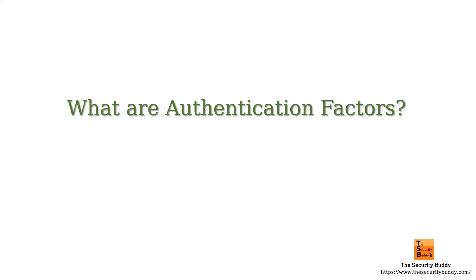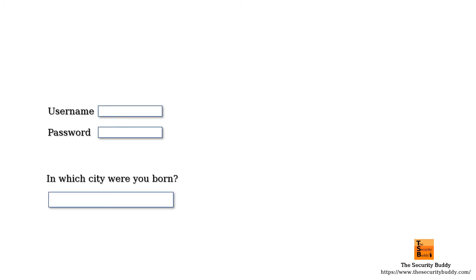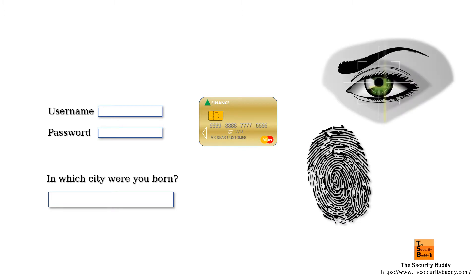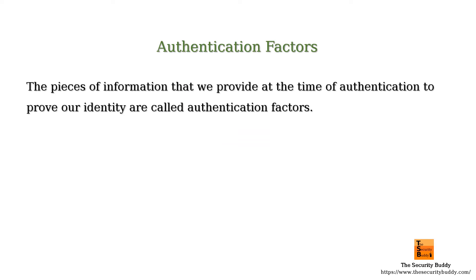What are authentication factors? In this video, we would try to understand that. When we authenticate to a server, we provide several pieces of information to prove our identity. For example, sometimes we provide a password or PIN or answer a security question. Sometimes we use an ATM card or a hardware token for authentication, and sometimes we use fingerprints or IDs to prove our identity. These pieces of information that we provide at the time of authentication to prove our identity are called authentication factors.